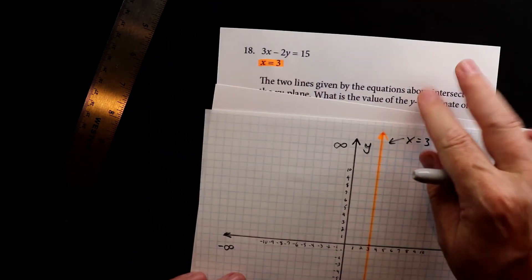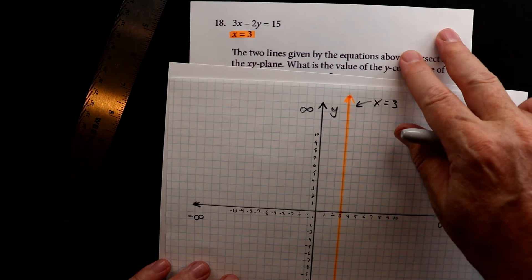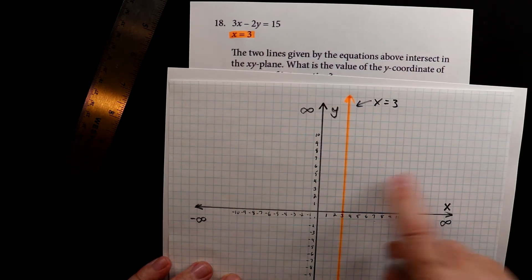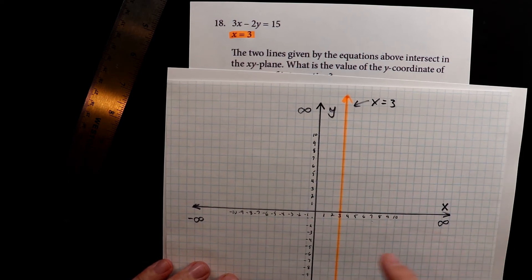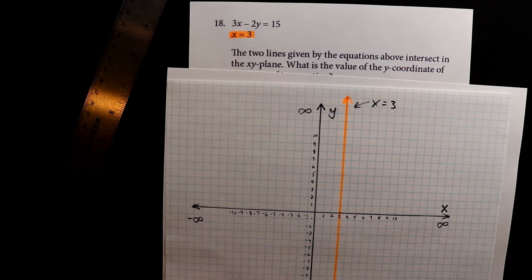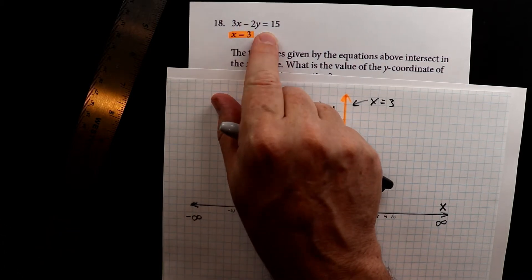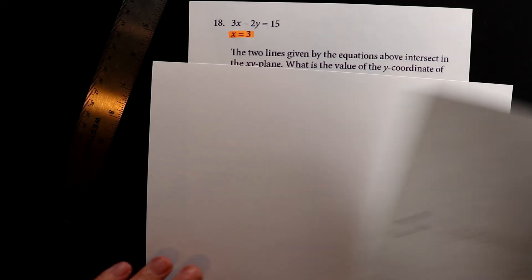Now we have to figure out the graph of the second line to see where they intersect. I'm going to show you two ways to do this — wherever the line crosses x equals three is your answer. There is also another way where we get the exact point. We'll do both ways as a review. I want to convert this equation into a form that I can graph easily.